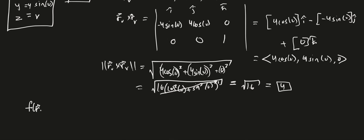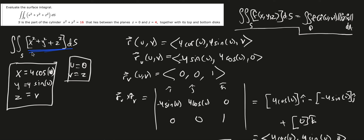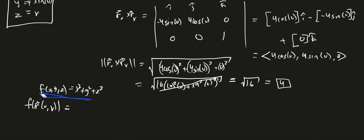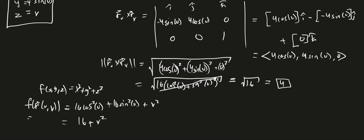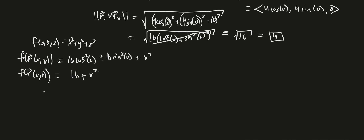Now we evaluate f(r(u,v)). Since f(x,y,z) = x²+y²+z², substituting gives 16 cosine squared u plus 16 sine squared u plus v squared, which simplifies to 16 plus v squared. So we set up the integral over D of (16 plus v squared) times 4, dA.